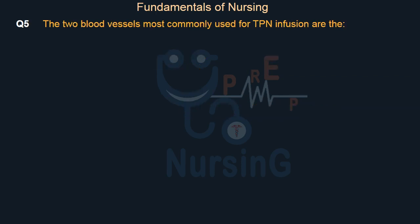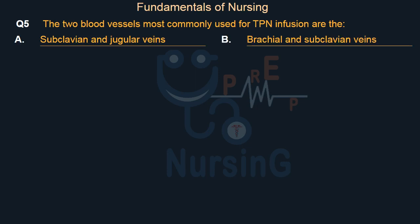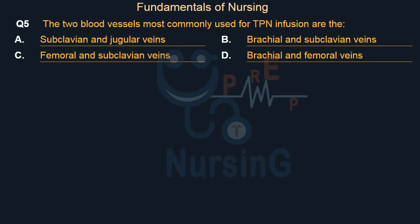The two blood vessels most commonly used for TPN infusion are: Option A: Subclavian and jugular veins. Option B: Brachial and subclavian veins. Option C: Femoral and subclavian veins. Option D: Brachial and femoral veins. Right answer is Option A: Subclavian and jugular veins.